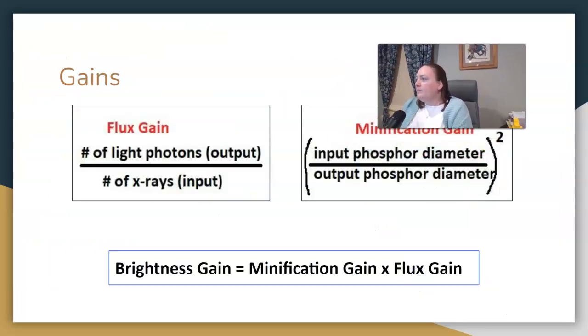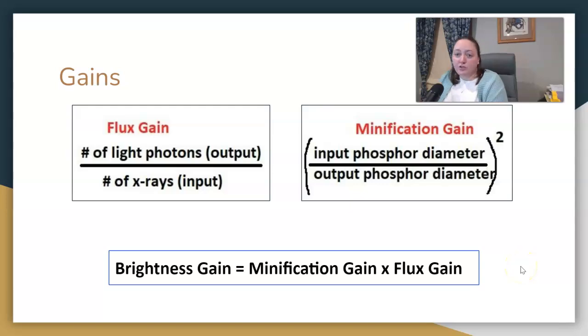There are some formulas involved. I think we should know these formulas. But do I think that we are going to need to do this math? I do not. And maybe we will in coming years here. But I think we should know what flux gain compares. And so this will be light photons to starting x-ray photons. Minification gain is about the diameter of input and diameter of output. Brightness gain will be these two things multiplied together.